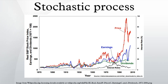For discrete time and continuous state space, if the index set of the process is N and the range is R, natural questions arise about sample sequences: What is the probability that each sample sequence is bounded? What is the probability that each sample sequence is monotonic? What is the probability that each sample sequence has a limit as the index approaches infinity? What is the probability that the series obtained from a sample sequence converges, and what is the probability distribution of the sum? Main applications of discrete time continuous state stochastic models include Markov chain Monte Carlo and the analysis of time series.